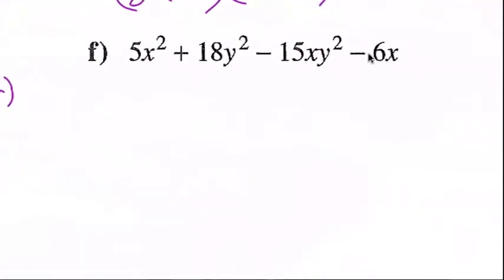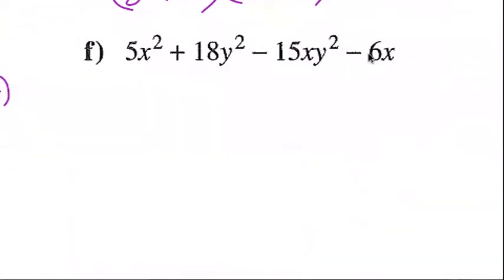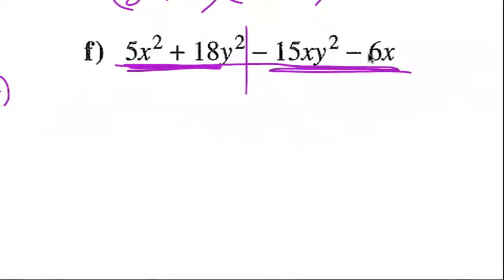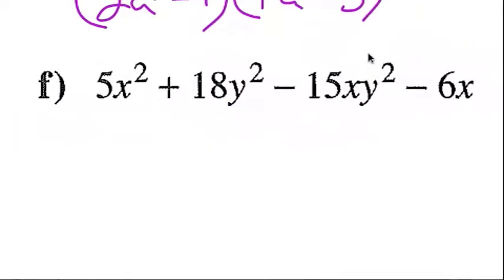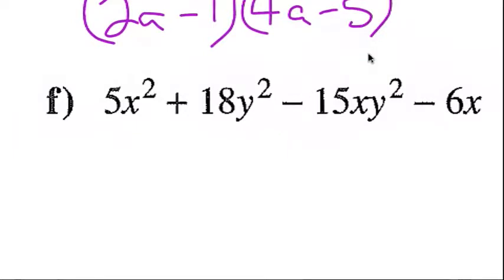Example f is a different one — they like to throw curveballs at you. If we try to factor 5x² + 18y² − 15xy − 6x by grouping as written, there's no GCF between 5x² and 18y², which really messes us up. So what we do is rearrange it so it might work. I can see 5x² might work better with 15xy, and y² might work better with something else — we play around. If it doesn't factor as written, swap terms and see what happens.